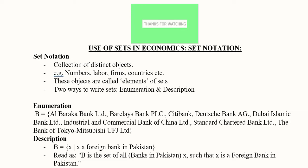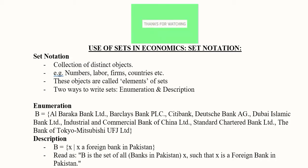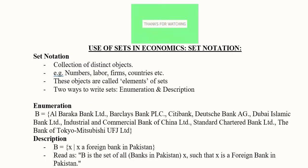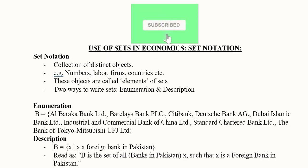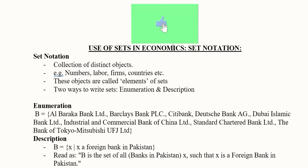In this video we will recall set notation and see how it can be used in economics. A set is basically a collection of distinct objects — for example, numbers, the labor of firms in an industry, or countries in a region. These are well-defined and distinct objects that we can gather into a set. They are written in curly brackets, as you can see here.